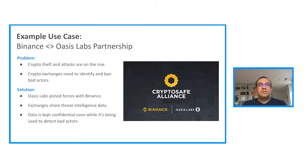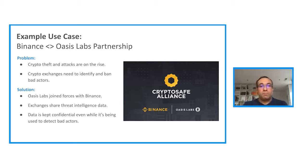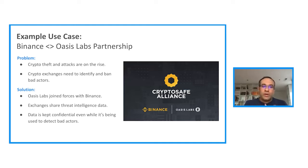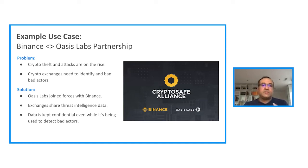Here is an example use case: a partnership between Binance and Oasis Labs. The problem we're solving is crypto theft — crypto theft and attacks are on the rise, and crypto exchanges need to identify and ban bad actors. We enable this by letting exchanges share their threat intelligence to a joint pool of threat intel, and then exchanges can run queries against this threat intel to check if, for instance, a wallet address is malicious as determined by members of the alliance. The unique properties here are that exchanges are not required to trust each other or trust Oasis. The data is kept confidentially and all transactions are handled with end-to-end confidentiality.